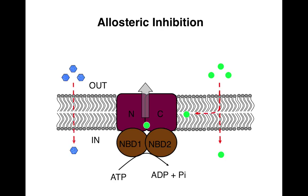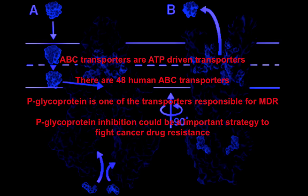The allosteric inhibitor can bind to PGP at a site which is distinct or different from the substrate binding site. Once it is bound, it causes a conformational change in PGP, and due to this conformational change, PGP is now non-functional and cannot efflux the anti-cancer drug from inside the cell.